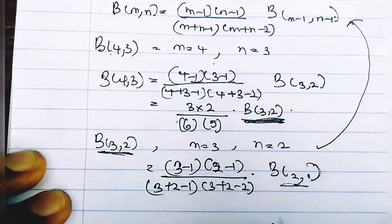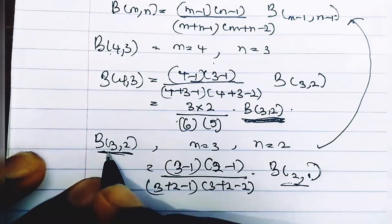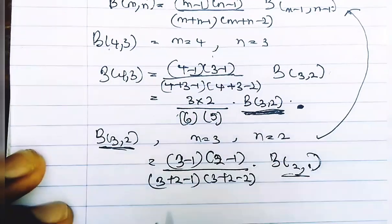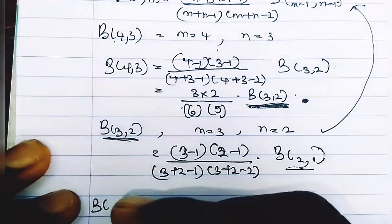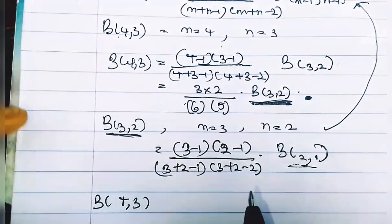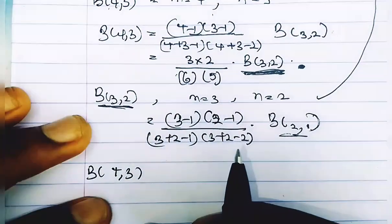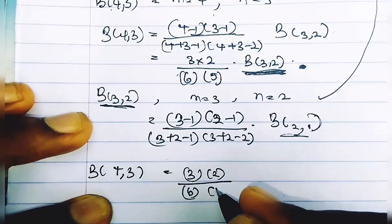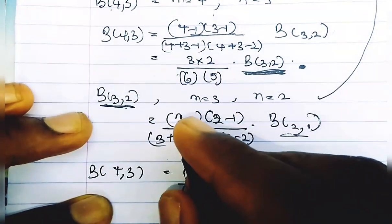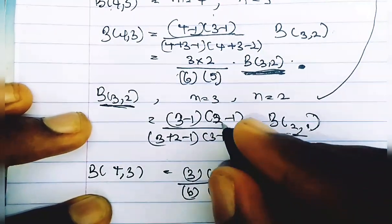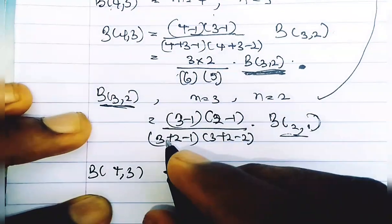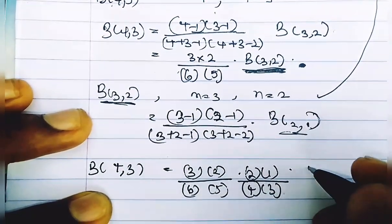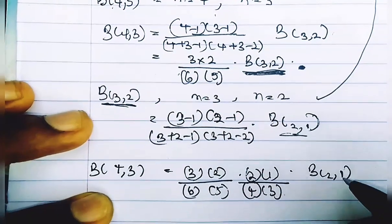This is the value of B(3, 2). We substitute it back into the equation it came from. So B(4, 3) = [3×2] / [6×5] · [(2×1) / (4×3)] · B(2, 1). That is why we said we need the value of B(2, 1) — because it is a constant.